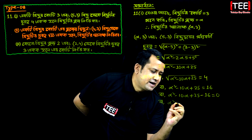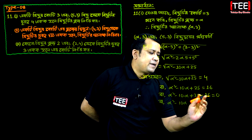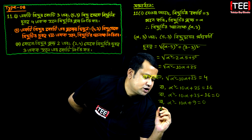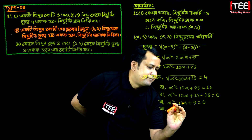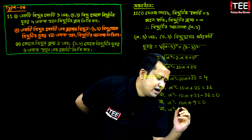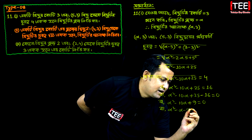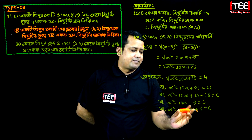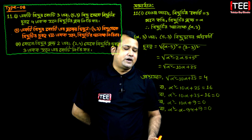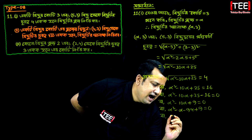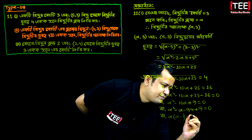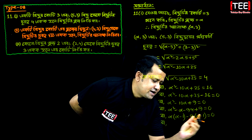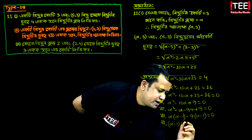We will see that the root of alpha square minus 10 alpha is equal to 0. We will see that the root of alpha is equal to minus 10 alpha minus 9 alpha plus 9 equal to 0. We will see that the root of alpha minus 9 alpha is equal to 0, and its value is equal to 0. In the same way, alpha is equal to 1, alpha minus 20.